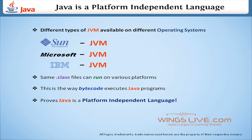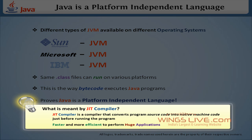Tip: Do you know what is meant by JIT compiler? The JIT compiler is a compiler that converts program source codes into native machine codes just before running the program. The JIT compiler is faster and more efficient for performing large applications.